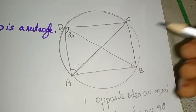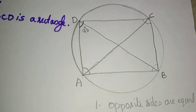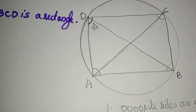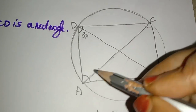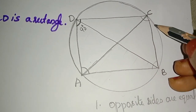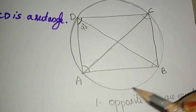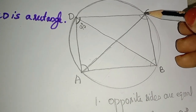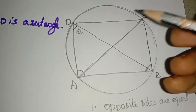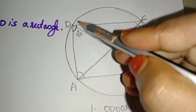The angle in a semicircle is a right angle, so the angle in a semicircle is 90 degrees. Therefore, angle BAD is a right angle.